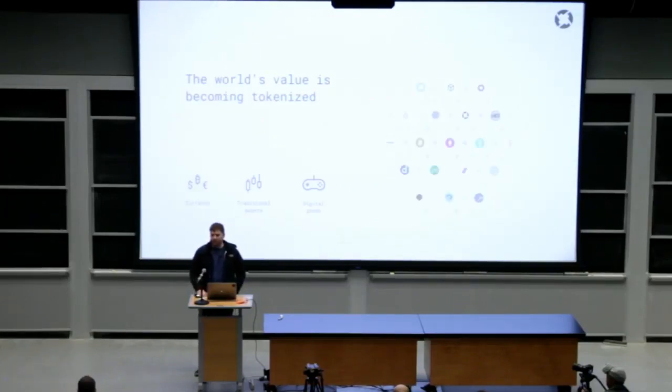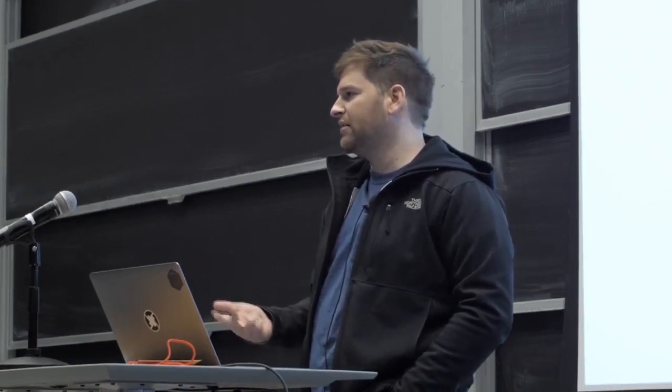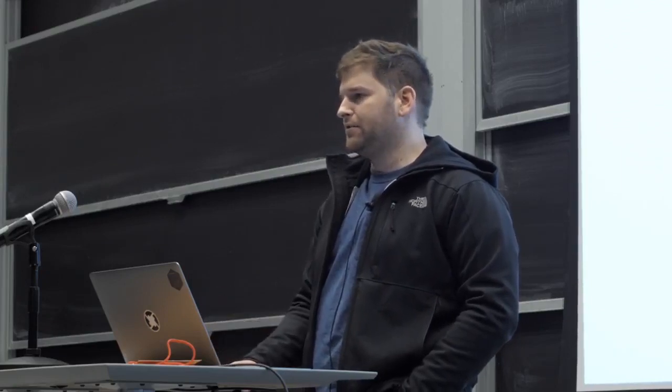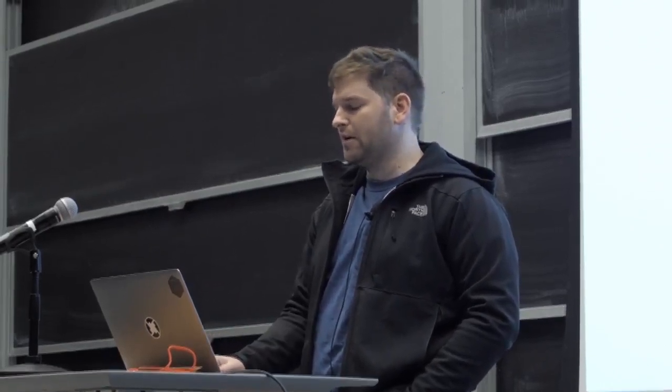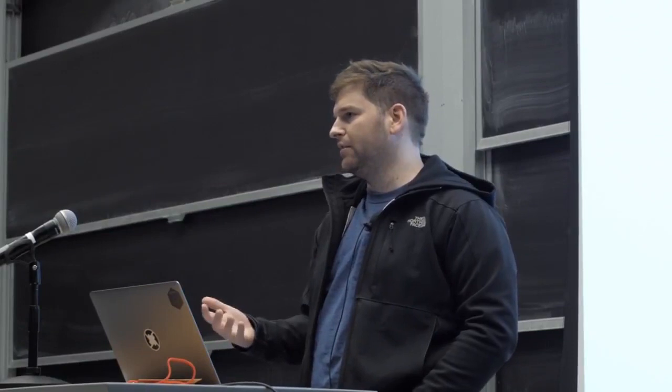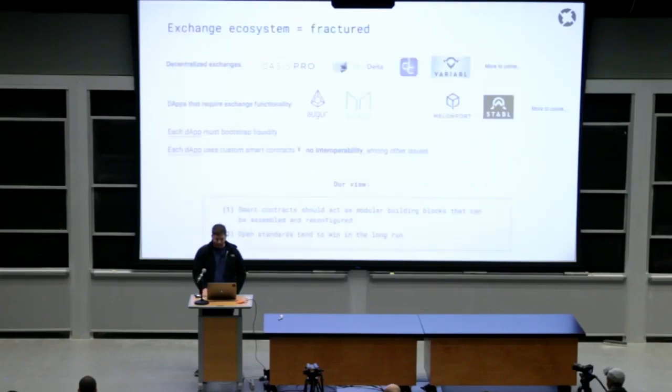So the world's value is becoming tokenized in the past year or year and a half. Hundreds of tokens have emerged on the Ethereum blockchain. And over the next few years, I think we'll see a wide variety of different assets being tokenized on Ethereum, ranging from fiat currencies to traditional assets like stocks and bonds, securities, all the way to video game items, scarce digital goods like licenses for software. All these things are eventually going to be converted or tokenized onto blockchains such as Ethereum.